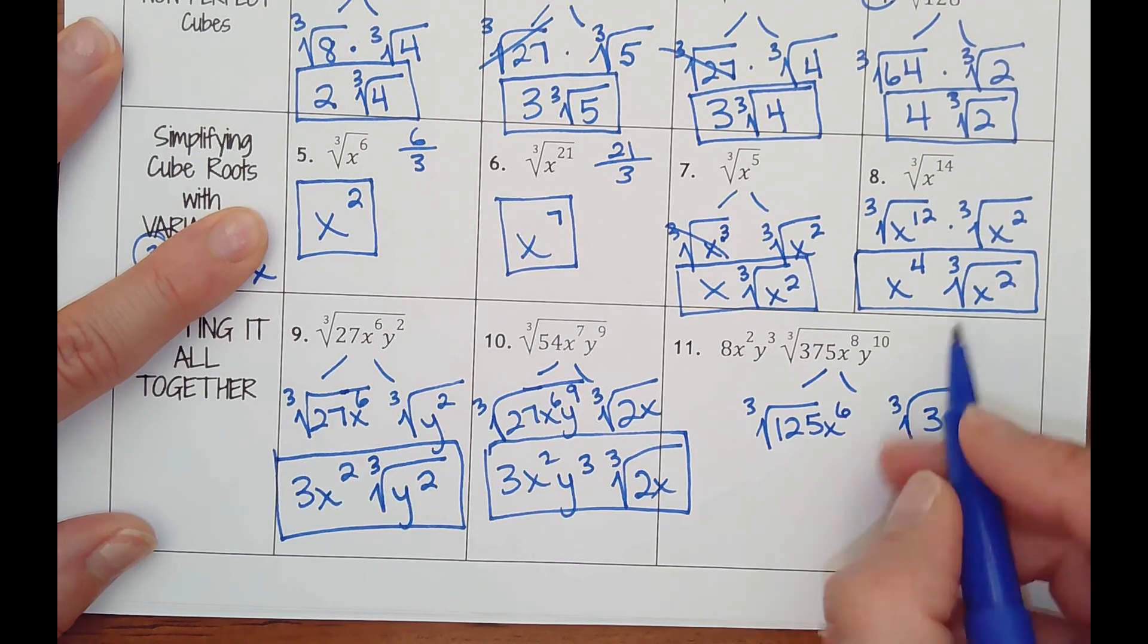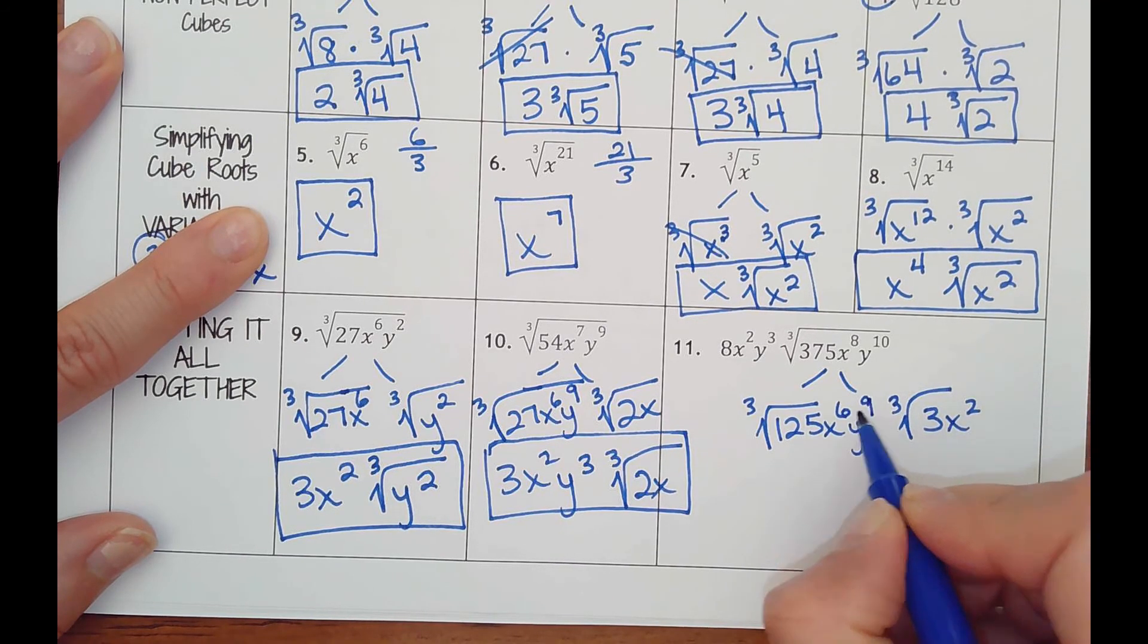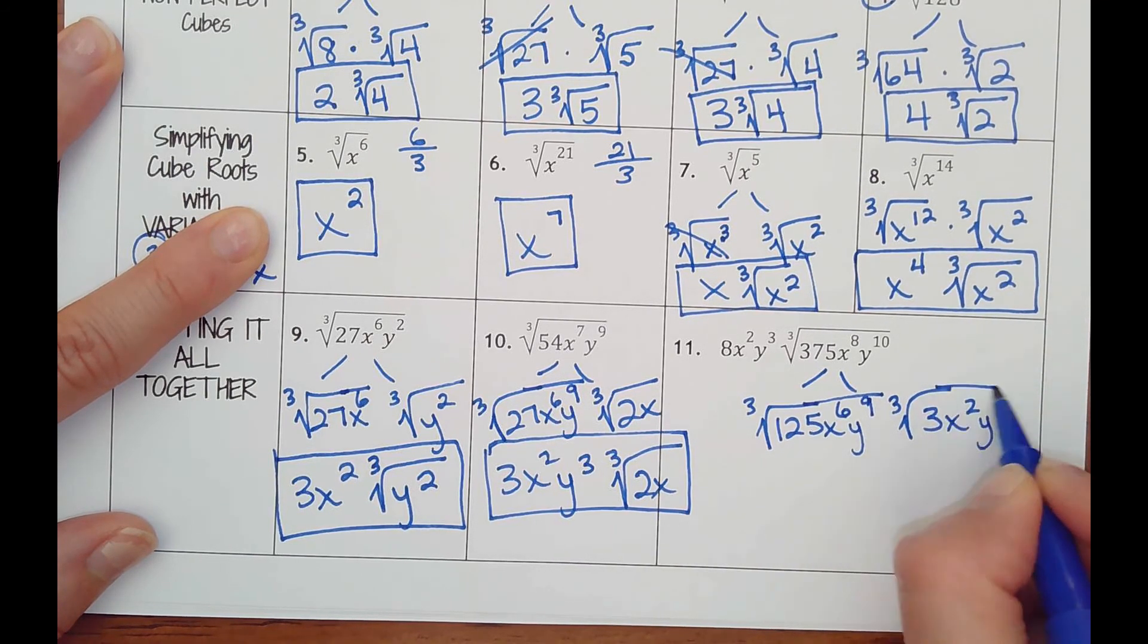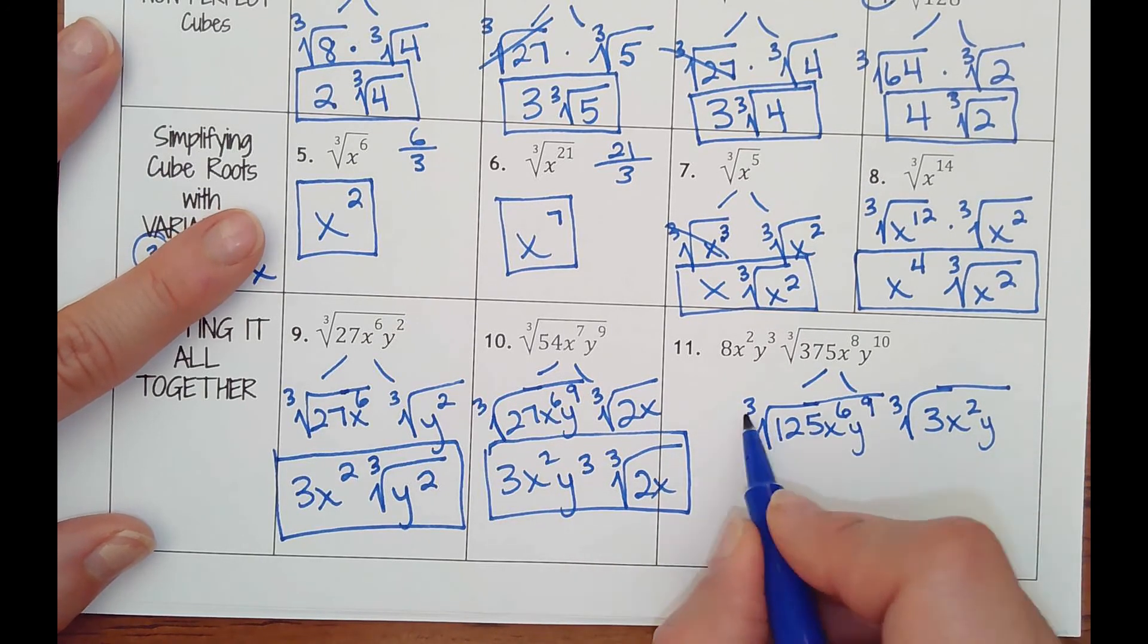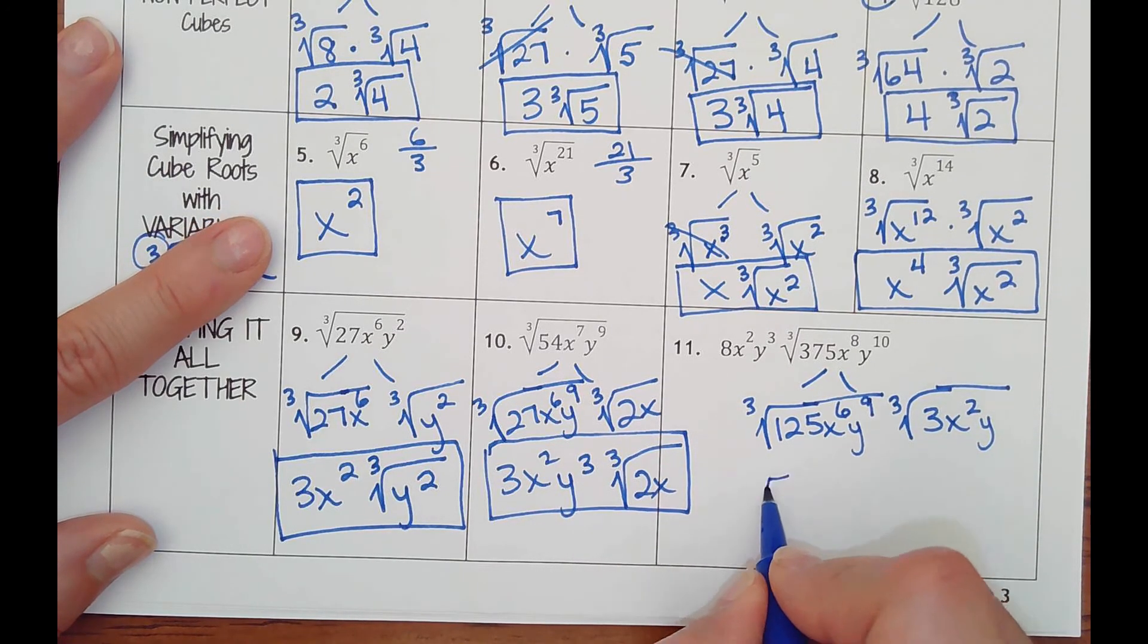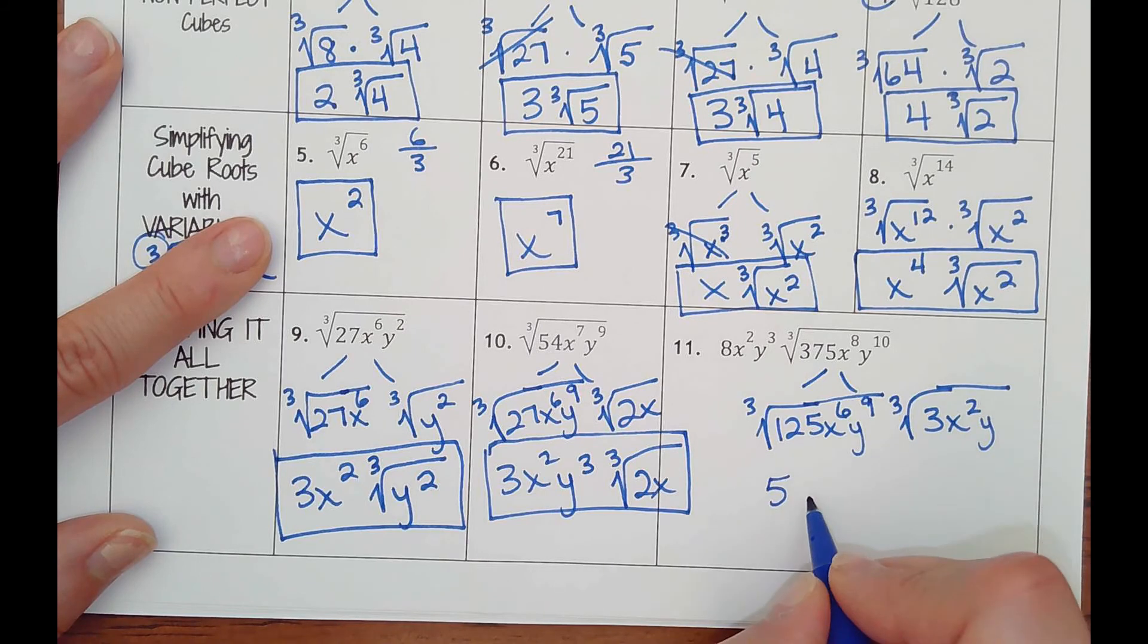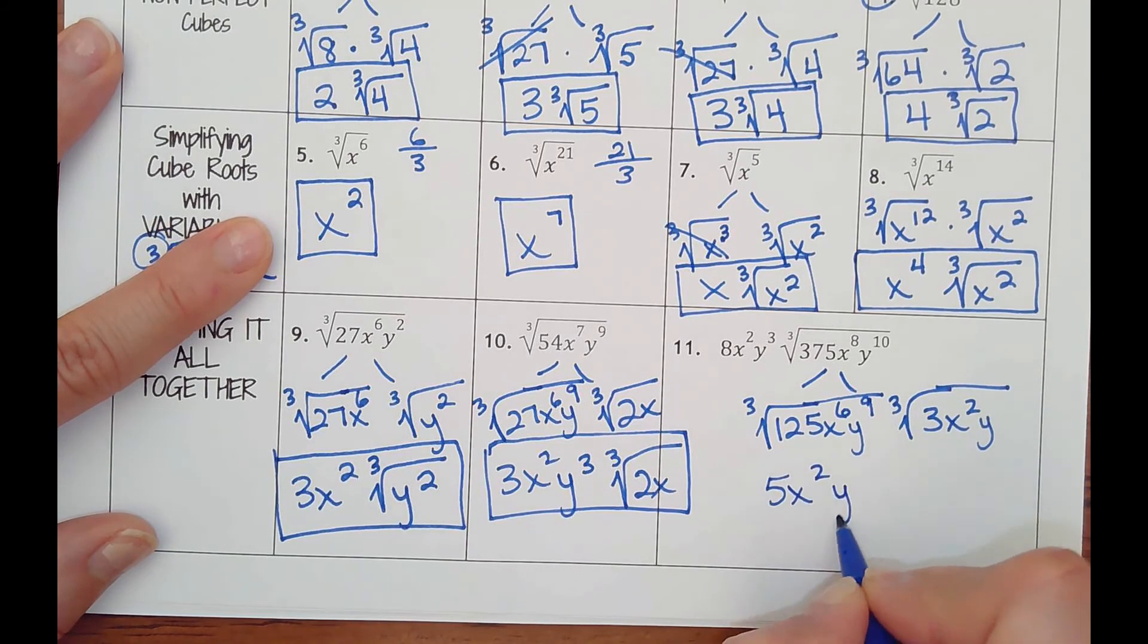We got cube root of 125 times the cube root of 3. X to the eighth, round down to x to the sixth, we would have x squared left over. Y to the tenth would round down to y to the ninth with the left over y.